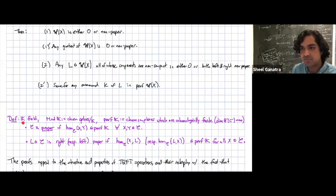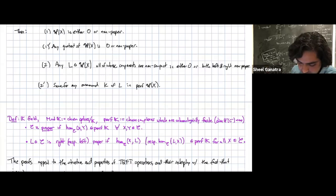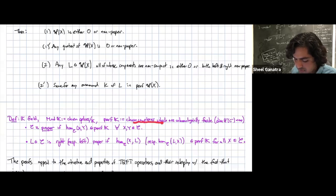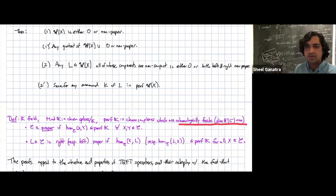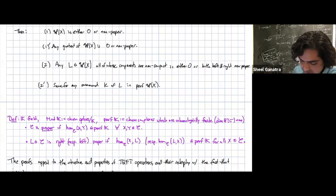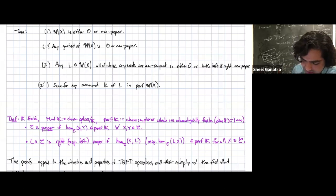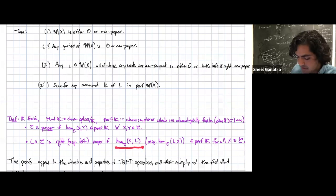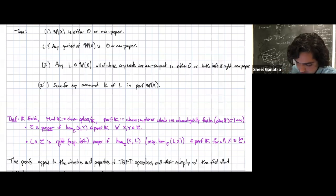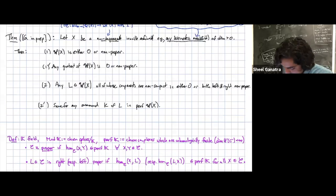I'll work over a field for simplicity, although the results are true over integers. I'll use the terminology that Mod_k is the category of all chain complexes over k and Perf_k is the category of perfect k-modules — chain complexes that are homologically finite, meaning they have total cohomology finite dimensional. We say a category is proper if all of its morphism spaces are perfect k-modules, meaning they are all cohomologically finite for every X and Y.